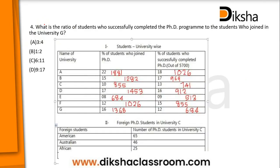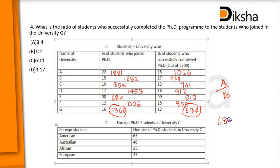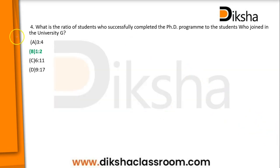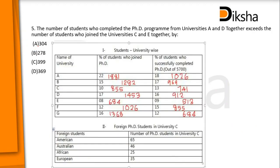Question four: what is the ratio of students who successfully completed PhD to students who joined in university G? University G: students joined = 1368, students completed = 684. The ratio of completed to joined is 684 / 1368 = 1/2, that is 1 : 2. So the answer is option B — 1 : 2.